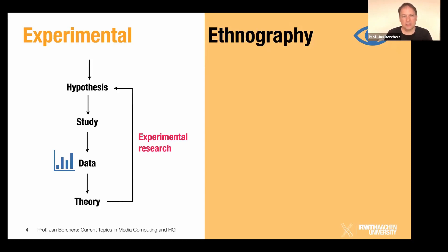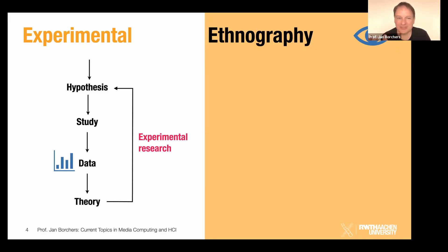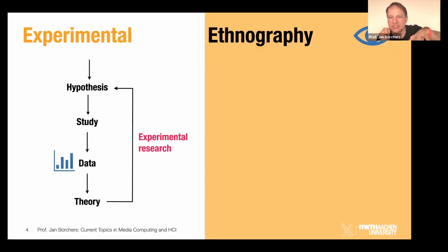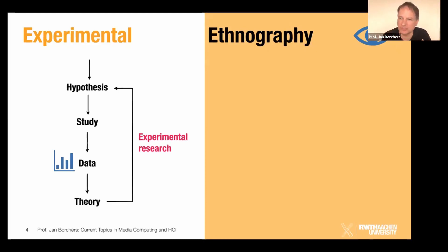Kind of like the DIA cycle we talked about last week — once you have a result, it usually means you now have new questions. You go back and say: I've learned what happens in this case, but I haven't really understood why. So you fiddle with other variables or create other conditions in your experiments and try to drill deeper.